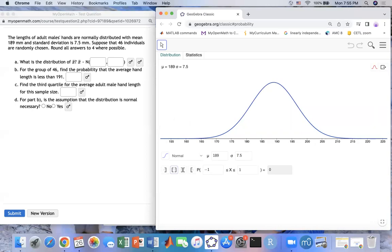Now, the standard deviation is not for one person, but they choose a group of 46 people. So therefore, by the Central Limit Theorem, you have to divide it by square root of 46.